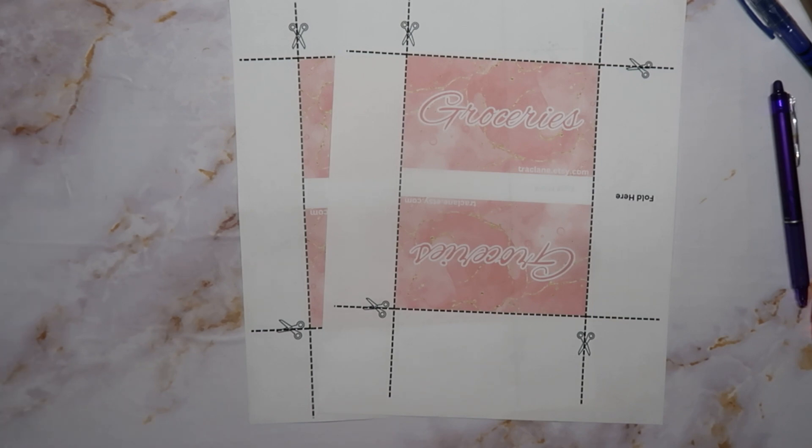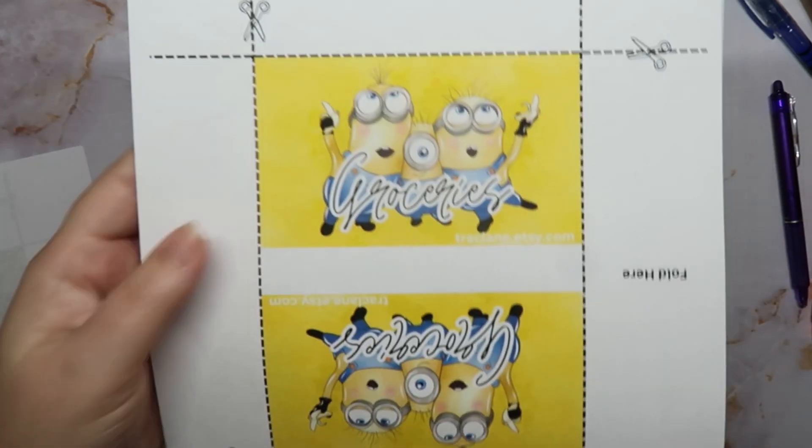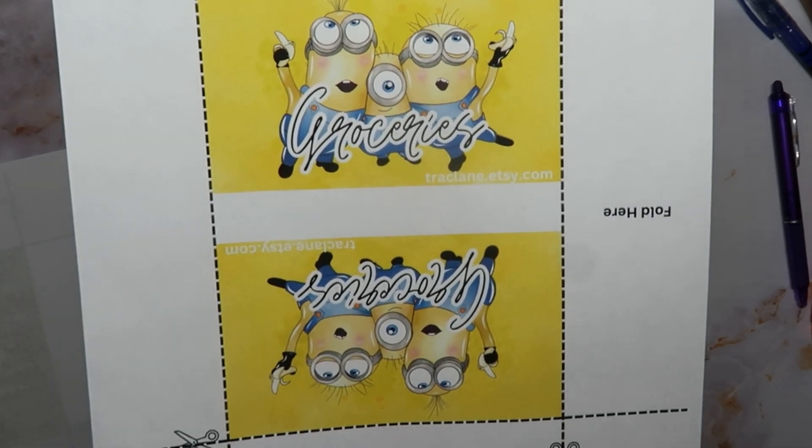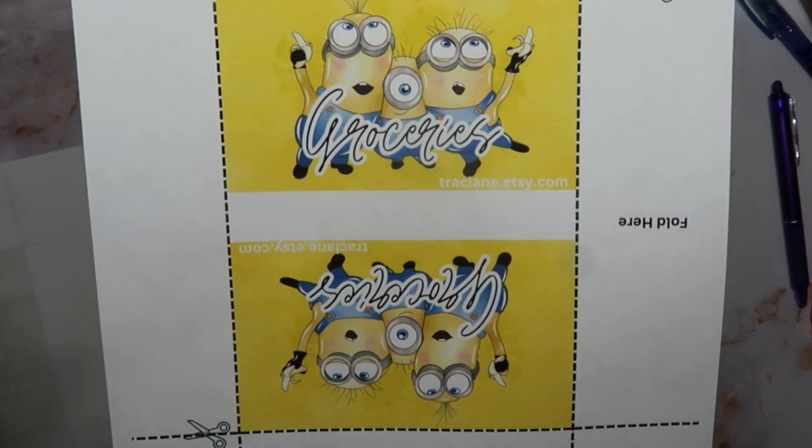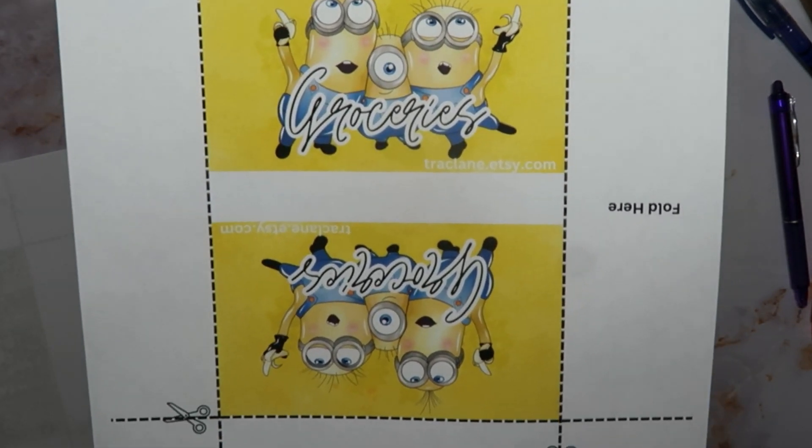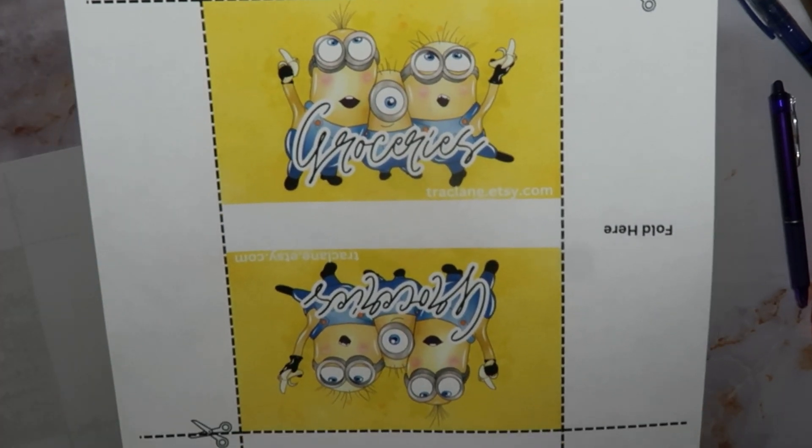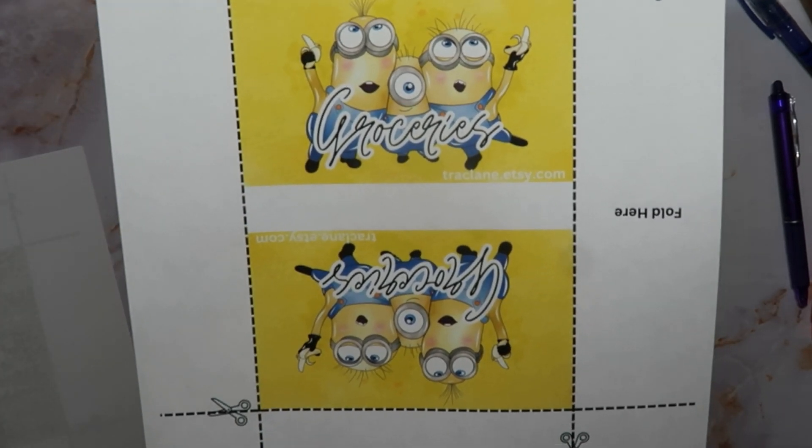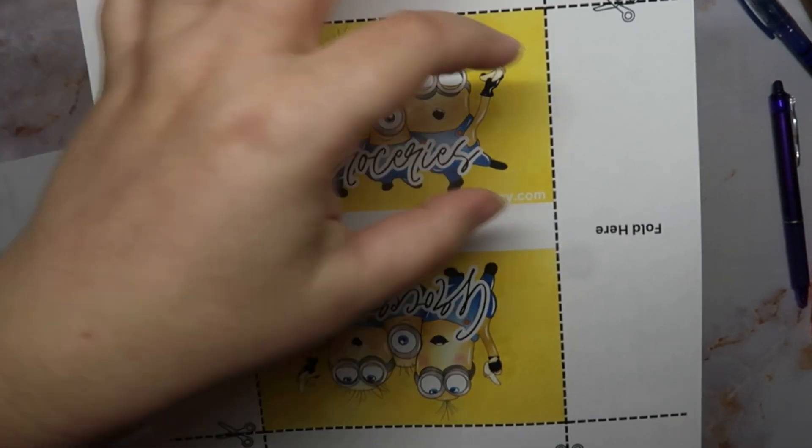And then I have minions and they're holding bananas, so of course I had to mock this one up for groceries. This is the only design for minions, so if you order like 10 minions it would all be the same design, just whatever categories that you would want them under.